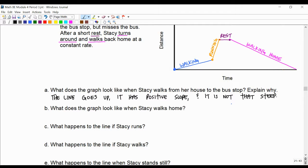What does the graph look like when Stacy walks home? The line goes down. It has negative slope. And it is not that steep. Similar to the other one.